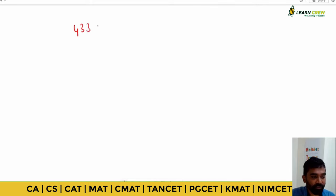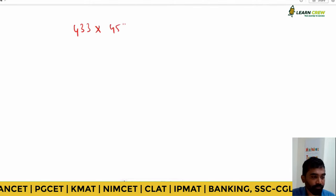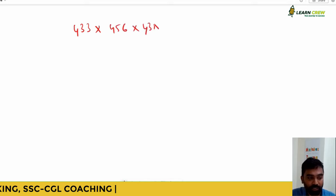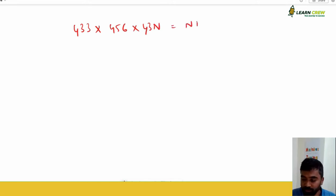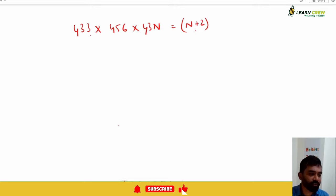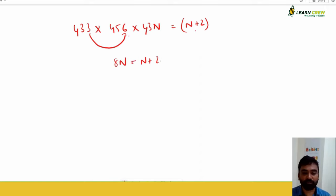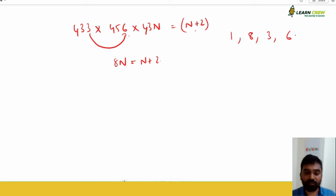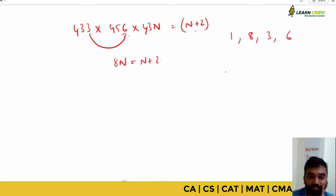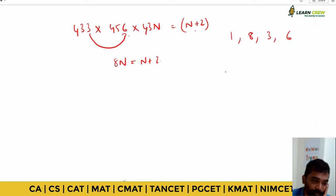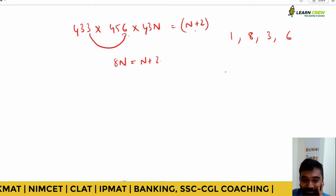For example: 433 × 46 × 43n × (n+2) × (n+...) — find the value of n or find the units place. You do: four into six gives 24, three into six gives 18, then 8n = n + (n+2). The options given are 1, 8, 3, 6. You need to find n. Substitute options: if n=6, eight into six is 48 — unit digit six, and six plus two is eight. Check: six equals eight? No. Test n=6: 8×6=48, unit digit 8; 6+2=8 — it is equal. Verify with options.